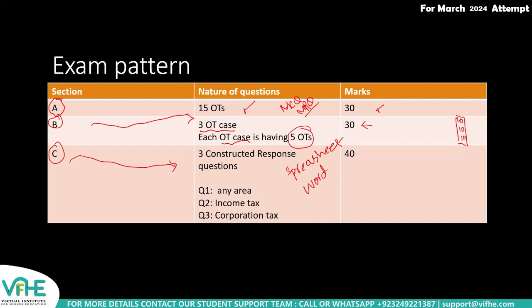Section C tests your skills in spreadsheet and word processing — this is called the constructed response section. You will be asked three questions: Question 1 is from any area of the syllabus and is worth 10 marks; Question 2 covers income tax rules and is worth 15 marks; Question 3 covers corporation tax and is worth 15 marks. Altogether Section C carries 40 marks.